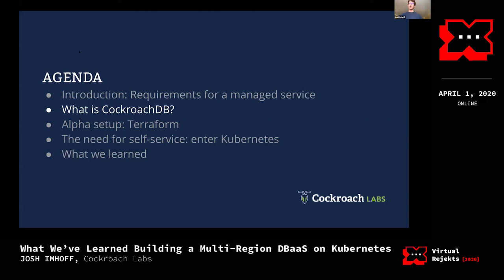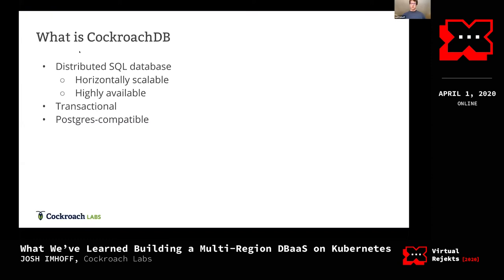Now a little bit about CockroachDB, and the reason we're doing this is to understand the production requirements that make it complicated to run on Kubernetes. CockroachDB is a distributed SQL database — what this means is that instead of just a SQL database you get ACID transactions and the relational model, but you also get the benefits of a distributed database: horizontal scalability, so if you want more compute you just add more nodes.